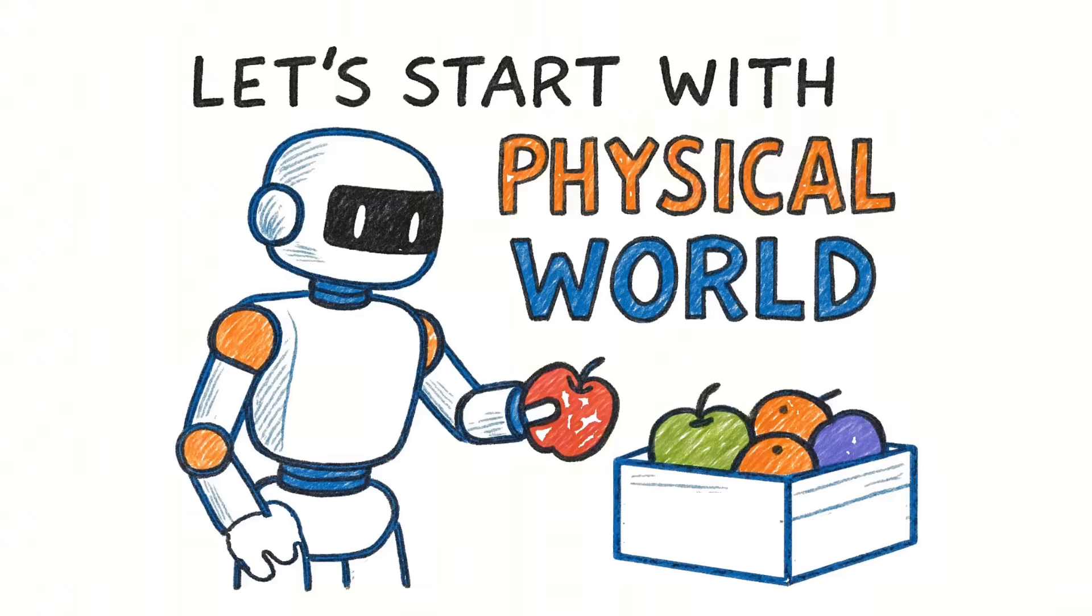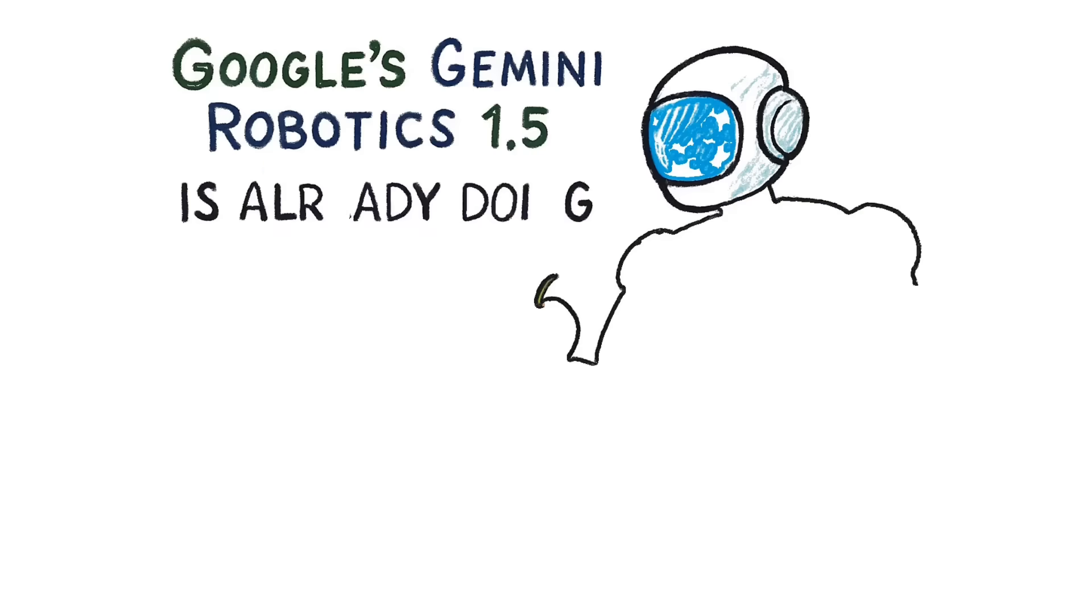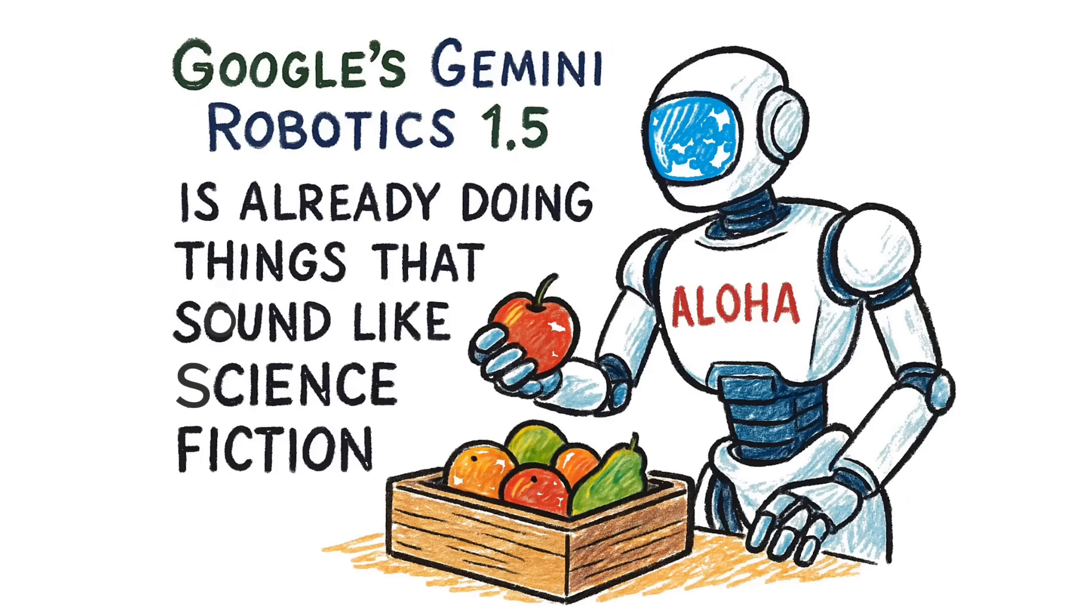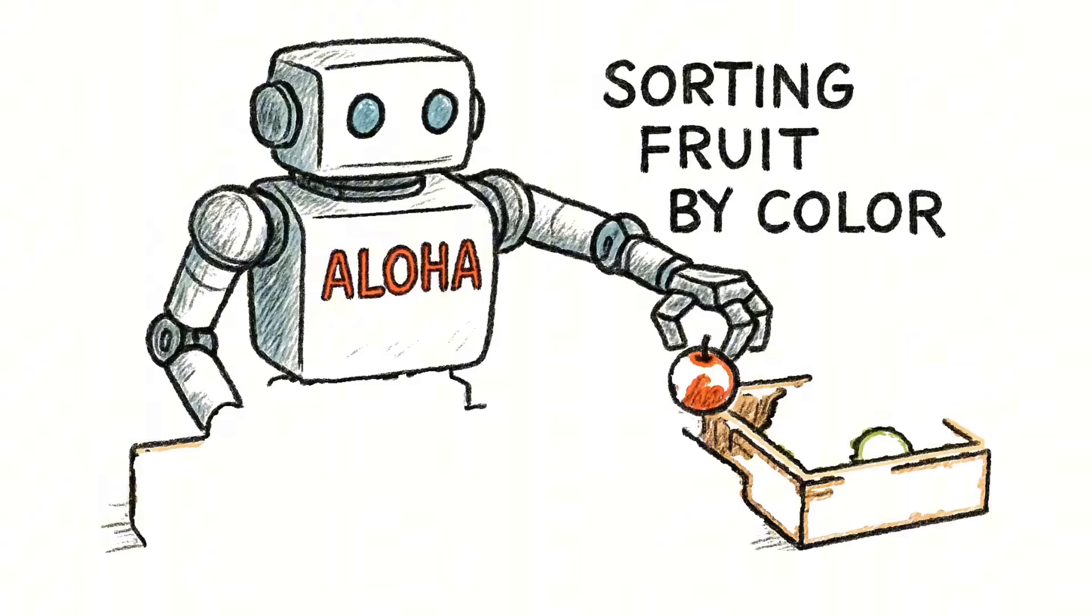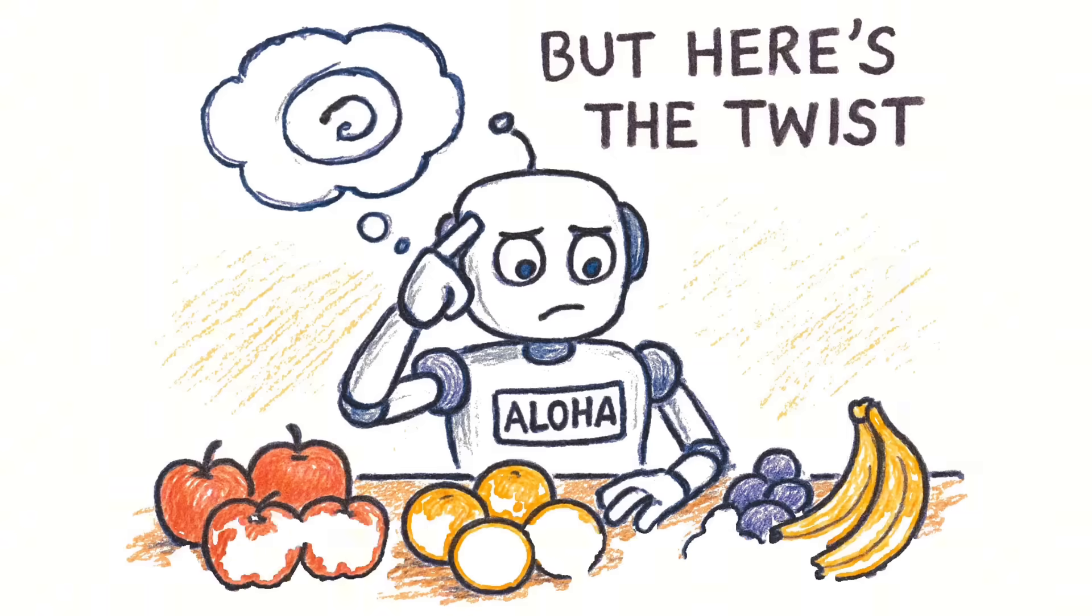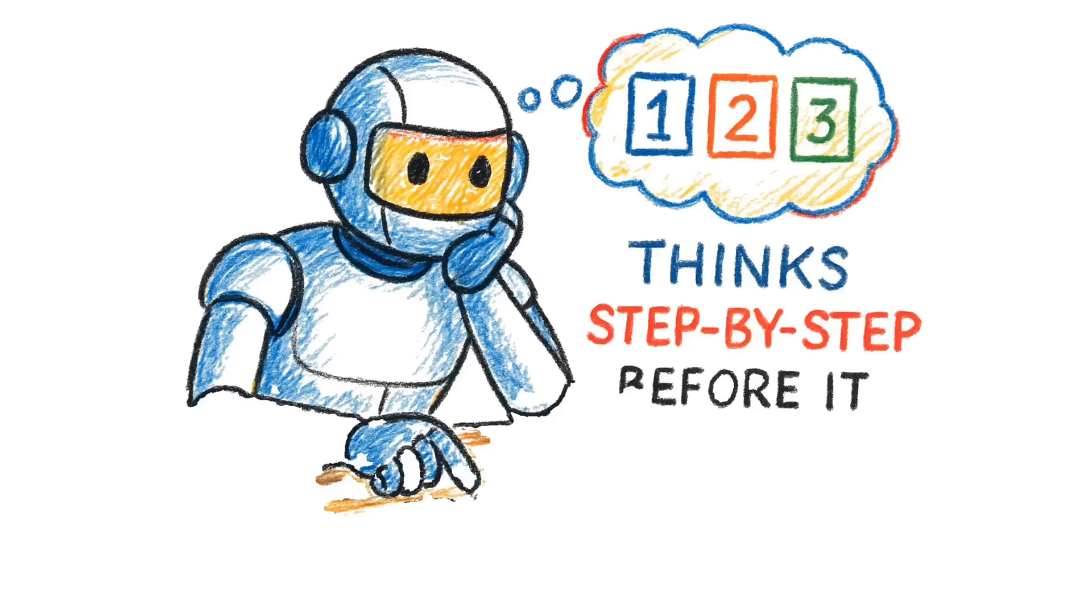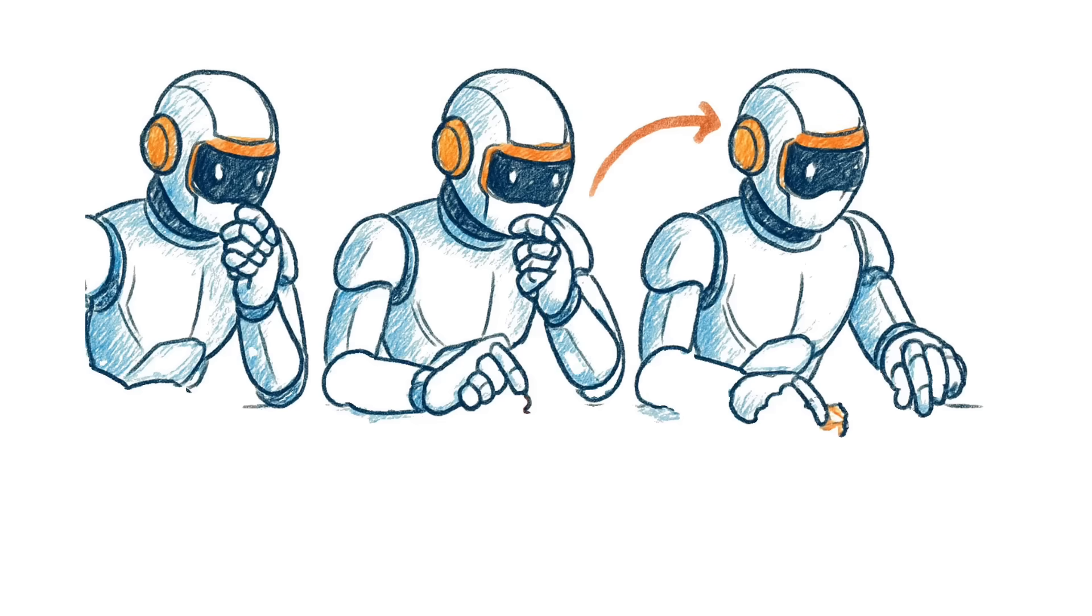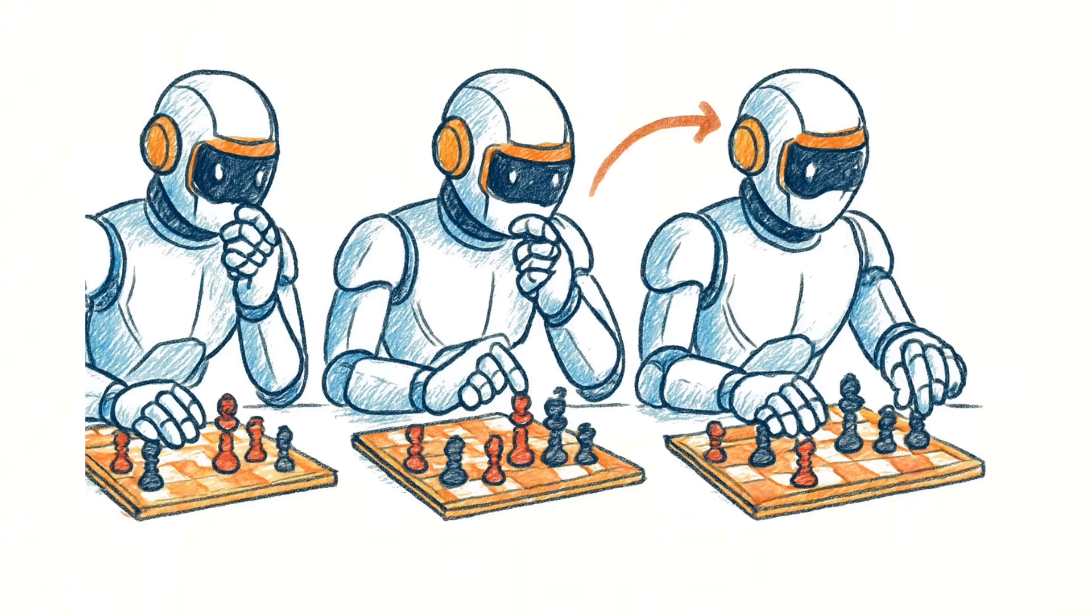Let's start with the physical world. Google's Gemini Robotics 1.5 is already doing things that sound like science fiction. Picture this, an aloha robot sorting fruit by color. Sounds simple, right? But here's the twist. It thinks step by step before it moves. It observes the table, plans the action, executes, then reobserves and adjusts.